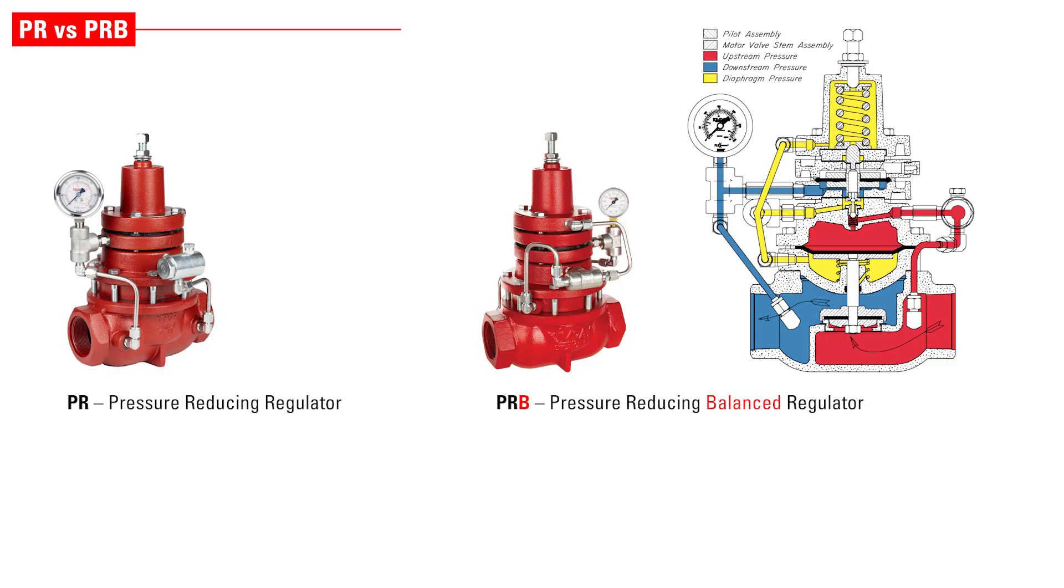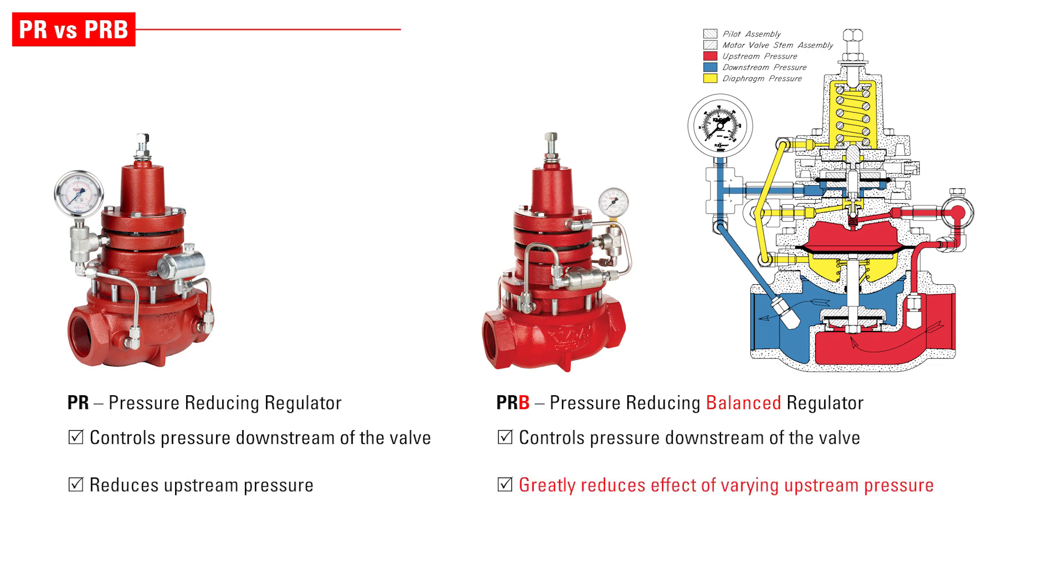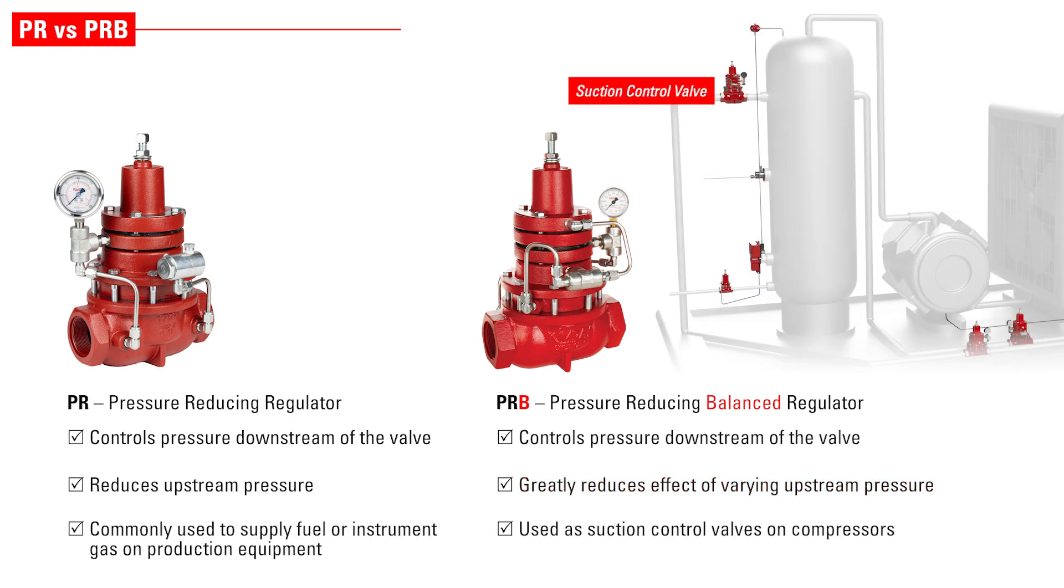A pressure-reducing balanced regulator, or PRB, controls pressure downstream of the valve. The balance feature greatly reduces the effect of varying upstream pressure. These regulators are commonly used as suction control valves on compressors where a higher degree of set point accuracy is needed.